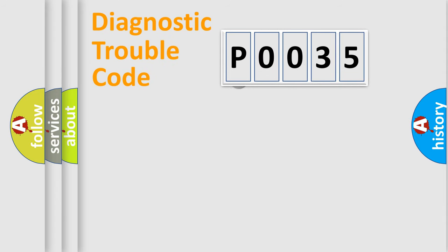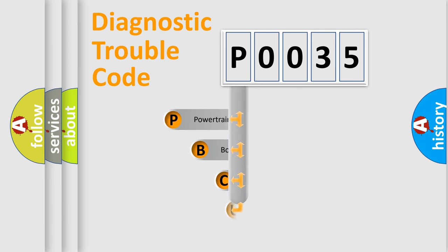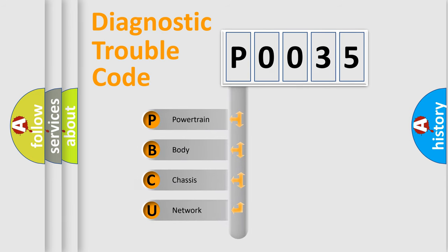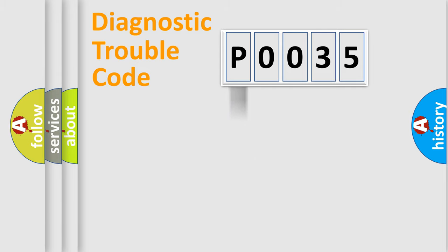First, let's look at the history of diagnostic fault code composition according to the OBD2 protocol, which is unified for all automakers since 2000. We divide the electric system of the automobile into four basic units: Powertrain, Body, Chassis, and Network. This distribution is defined in the first character of the code.